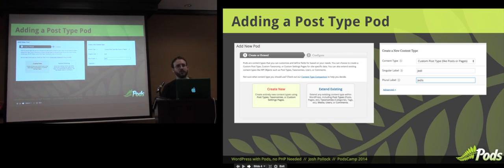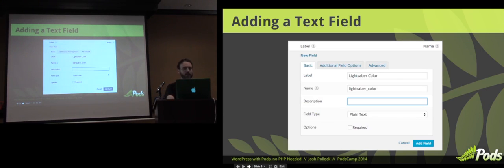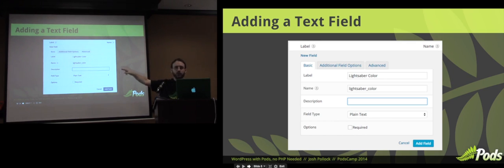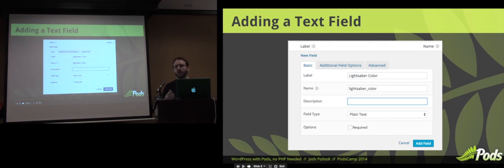I'm a nerd so we're using Jedi and Jedis. We can add a basic text field with simple options. We just give it a name and it will automatically generate its programmatic name. This is an important distinction — the label is what will show up in the editor, but when we address it in code or in our template, it's going to be this auto-generated name, which we can change. It just moves to lowercase and puts an underscore. So when we use the lightsaber color field in our code or template, it's going to be lightsaber_color.